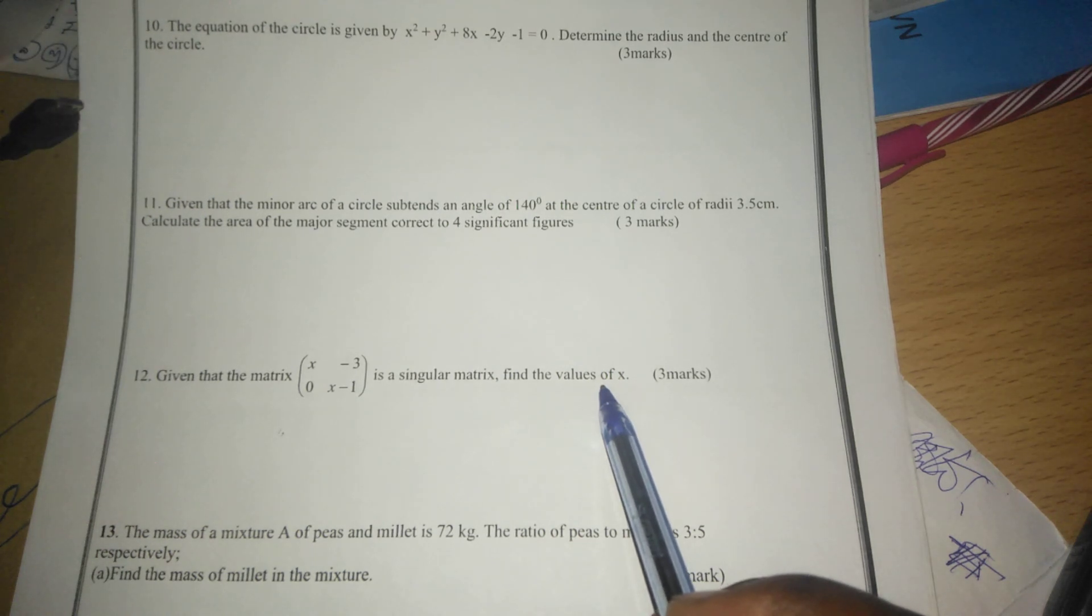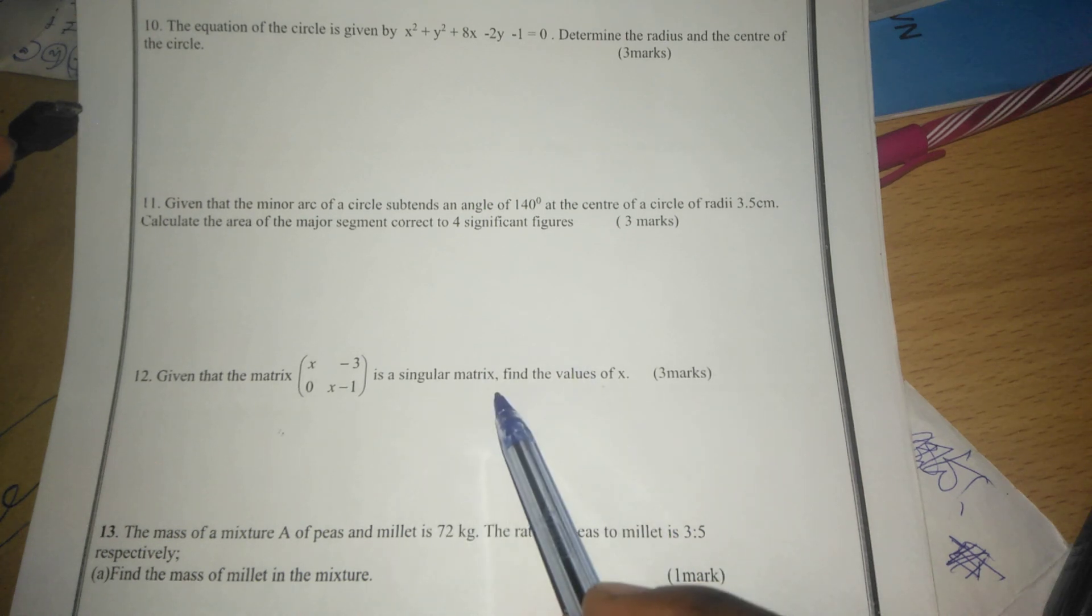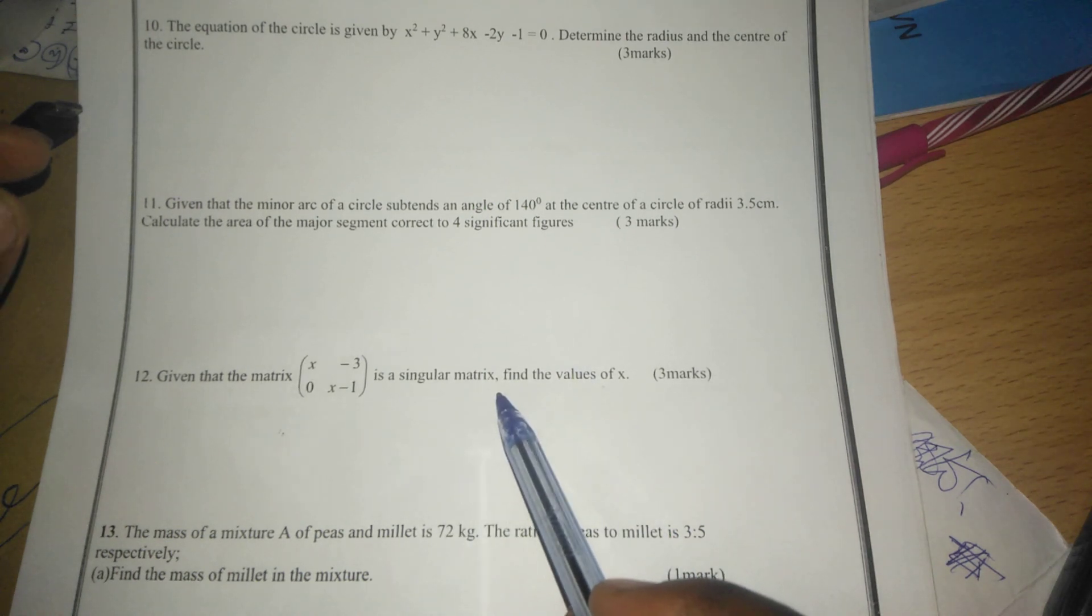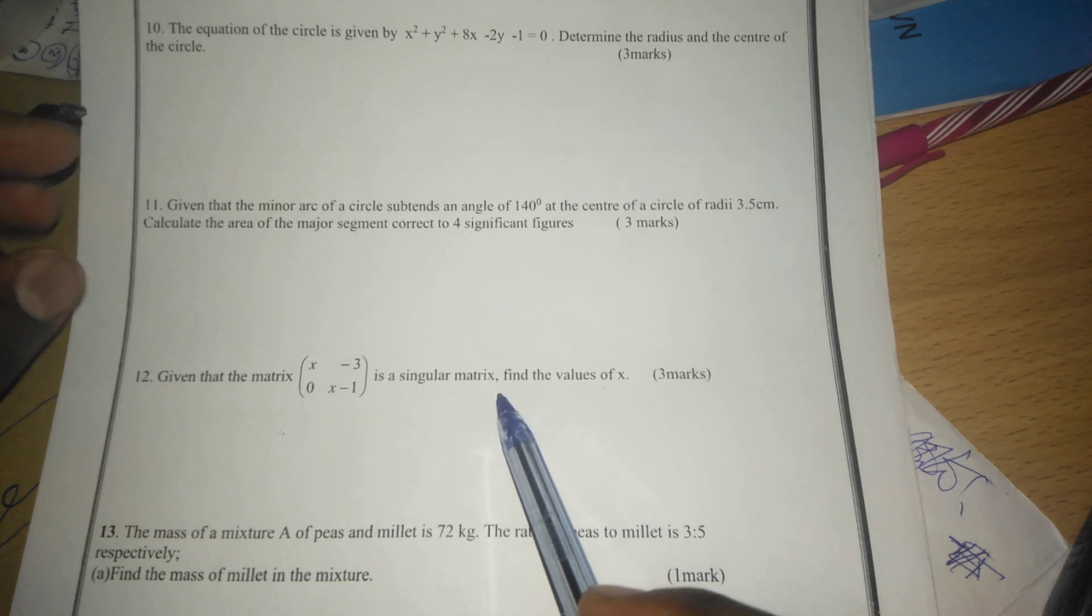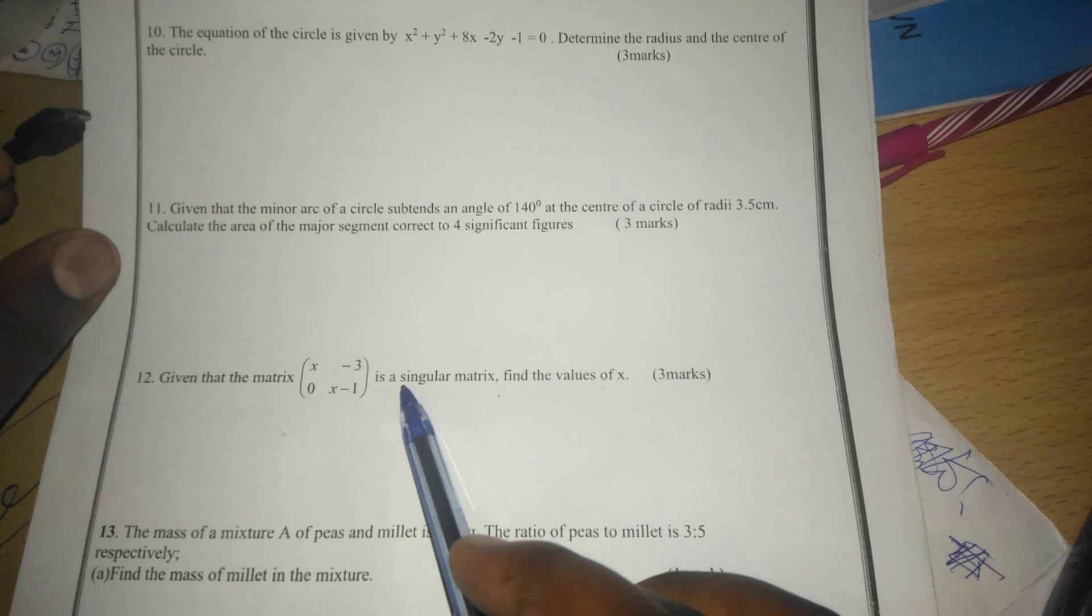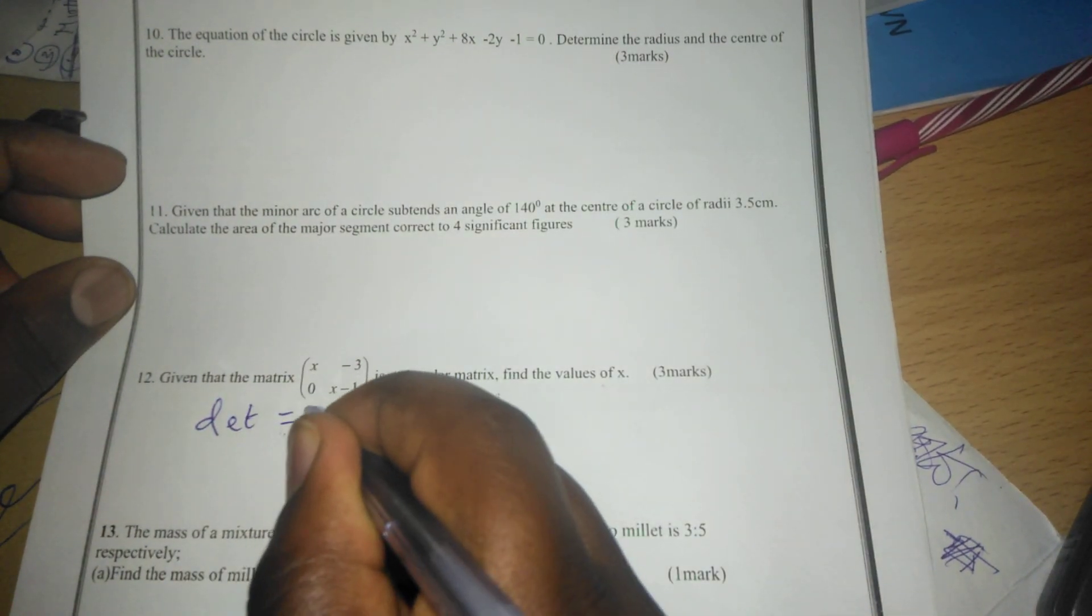To be noted very keenly is that a singular matrix is a matrix without an inverse. And for a matrix to have no inverse, it means it has a determinant of 0. Therefore, when we are told that a matrix is singular, it means that its determinant is equal to 0.